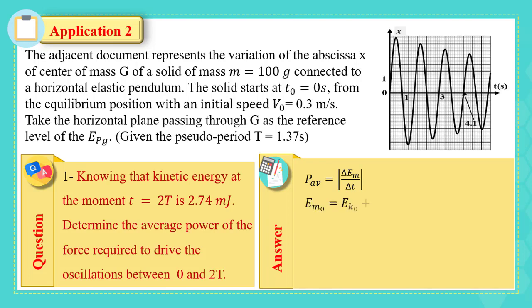You should find the mechanical energy at T equals to 0, which is the kinetic energy plus the elastic potential energy. But at equilibrium, the elastic potential energy is 0. So the kinetic energy at 0 seconds is half mV squared, which is 0.0045 joules.